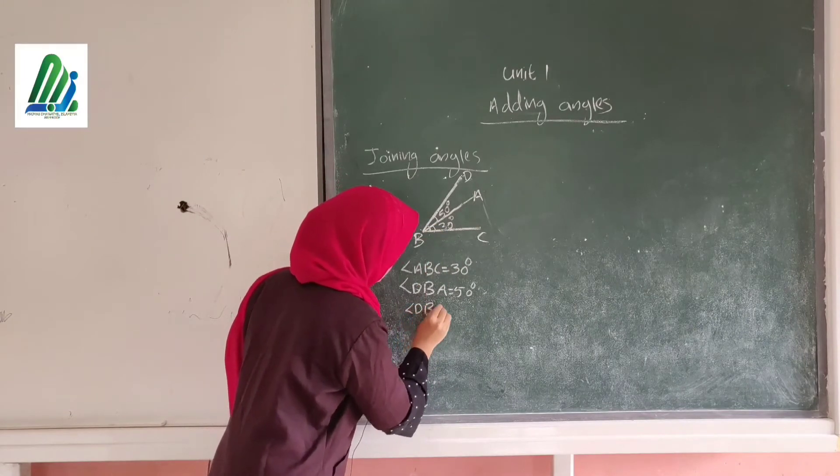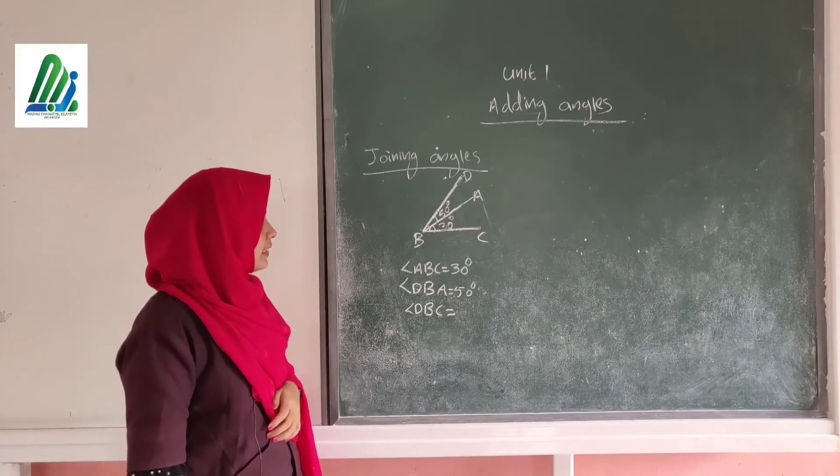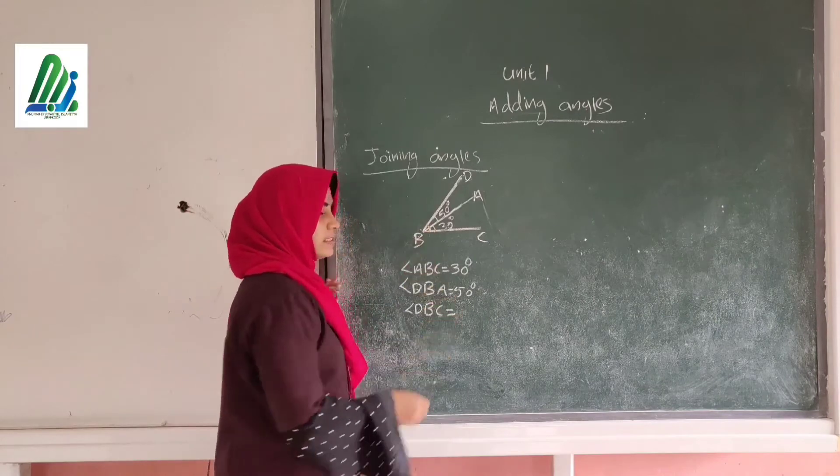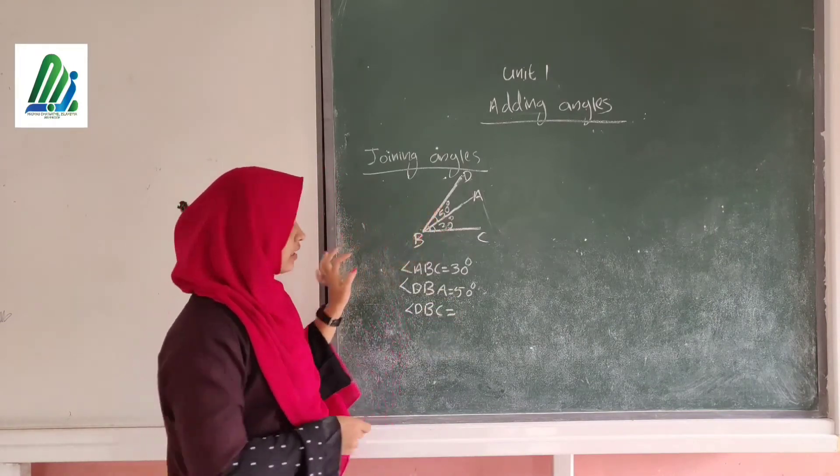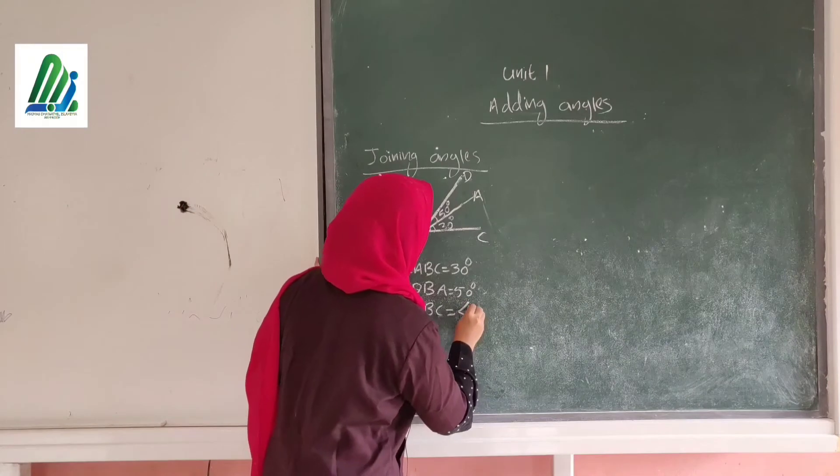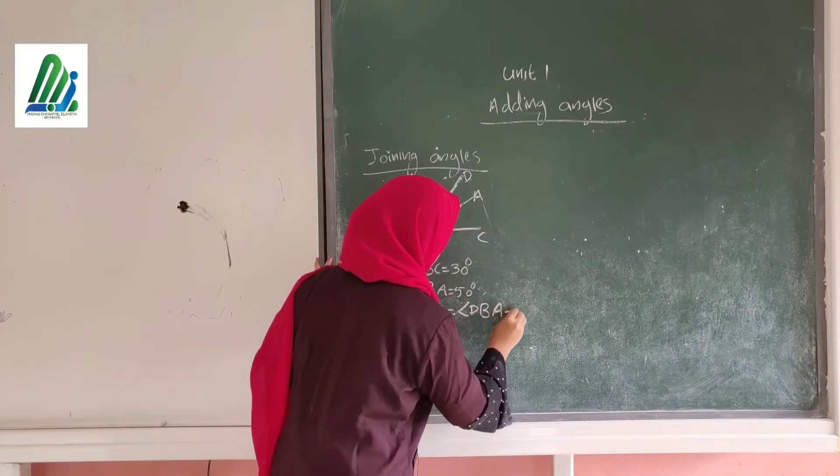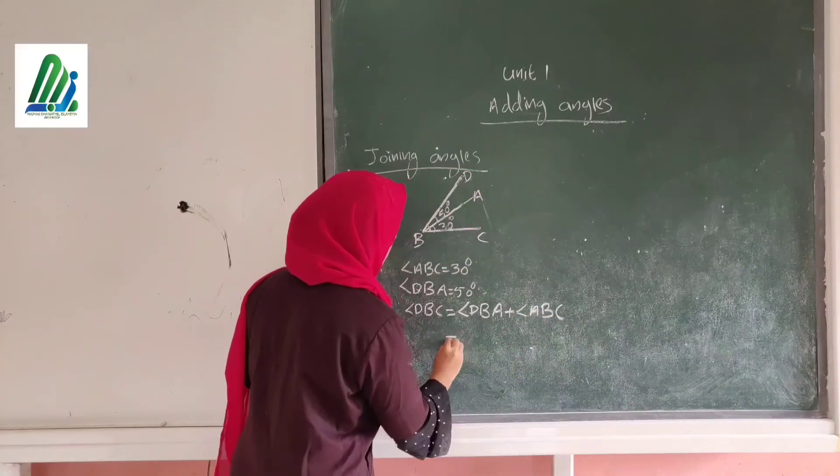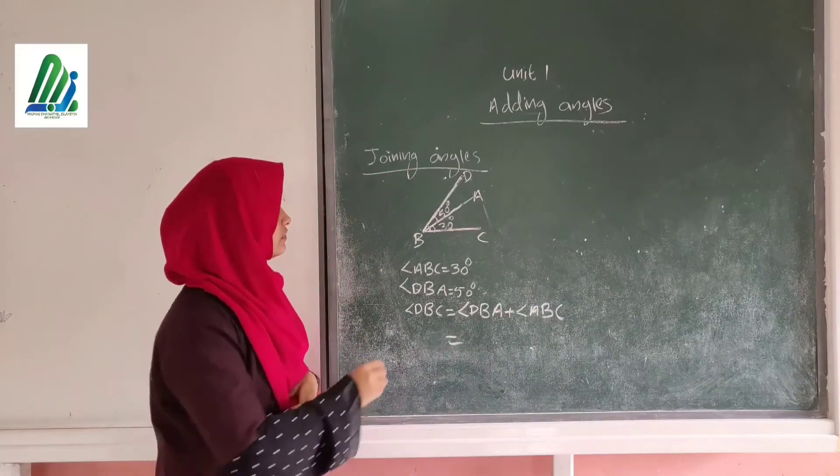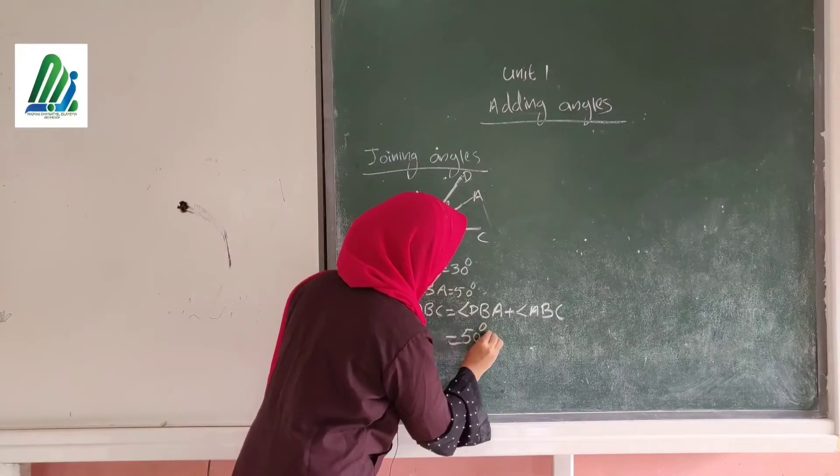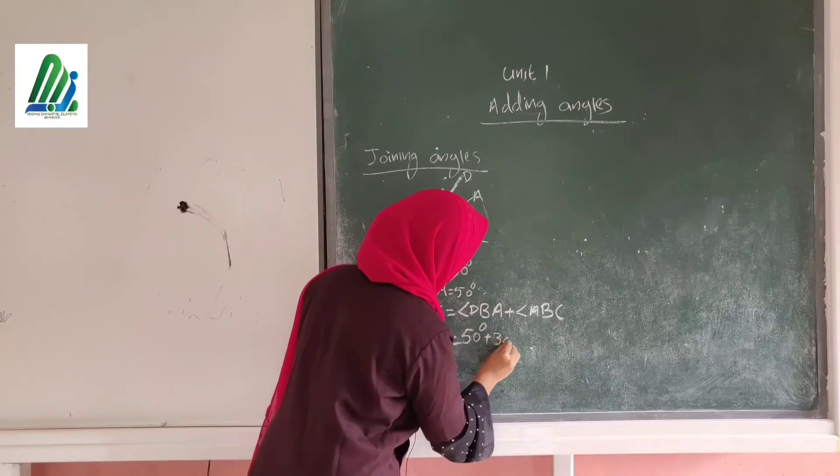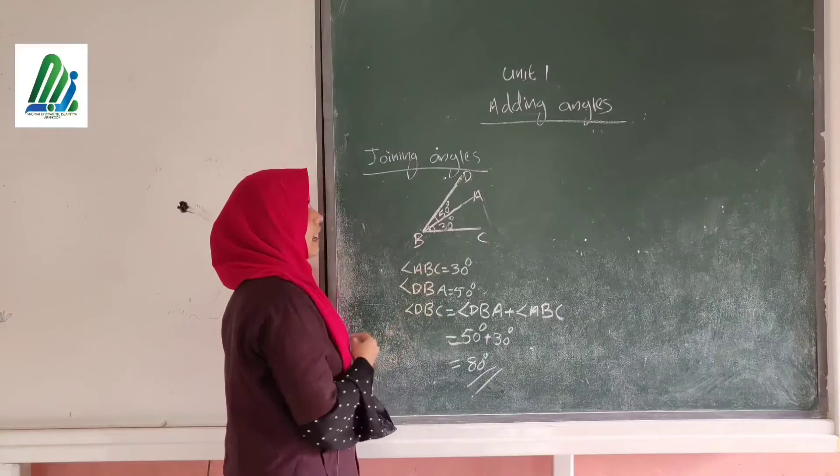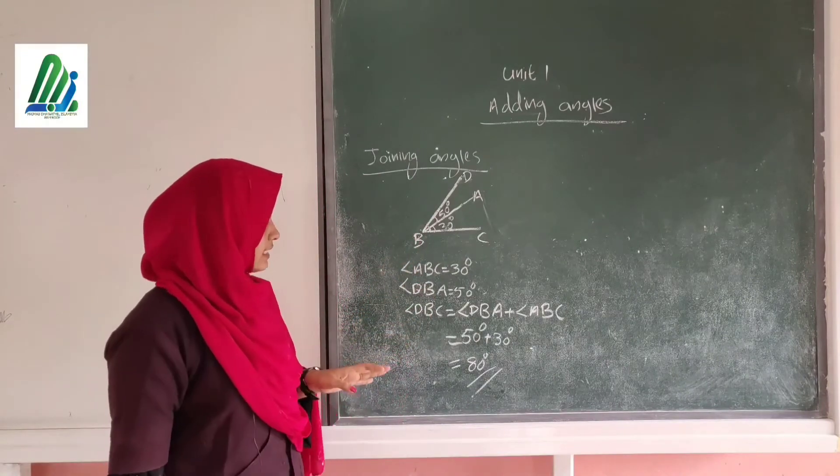So how much is this angle, angle DBC? How much? The angle DBC is the sum of these two angles. Okay? The sum of the angle DBA and the angle ABC. So here the angle DBA is 50 degrees, plus the angle ABC is 30 degrees. So the total angle DBC is 80 degrees.